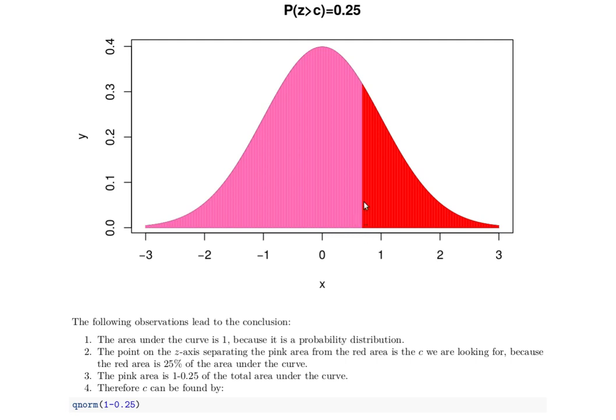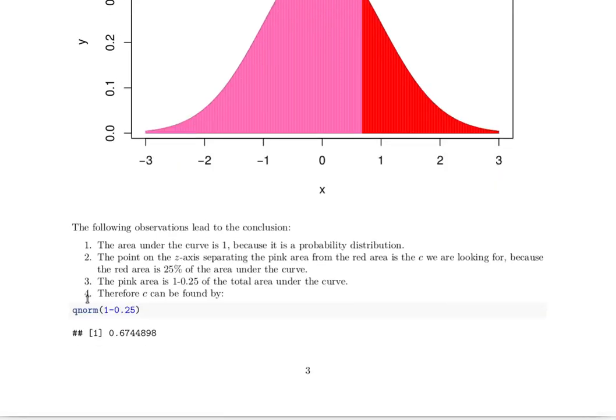So we'll be able to do that because this area is 1 minus the 25%. So it's just going to be a Q norm of 1 minus 0.25. And so this number is going to be 0.67.